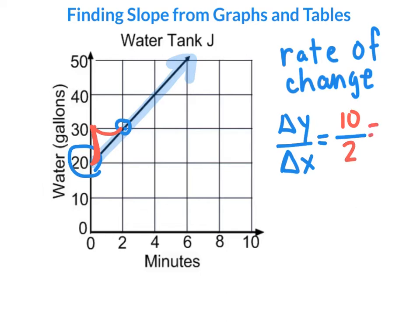We can simplify that to five. So there are five gallons of water for every one minute. So now we can throw that into our equation of y equals mx plus b. So we have y equals, our slope is five, and we'd multiply that by however many minutes we're looking at, plus our y-intercept of 20.